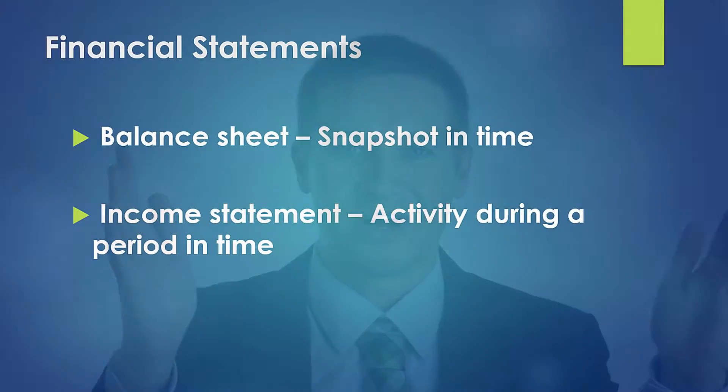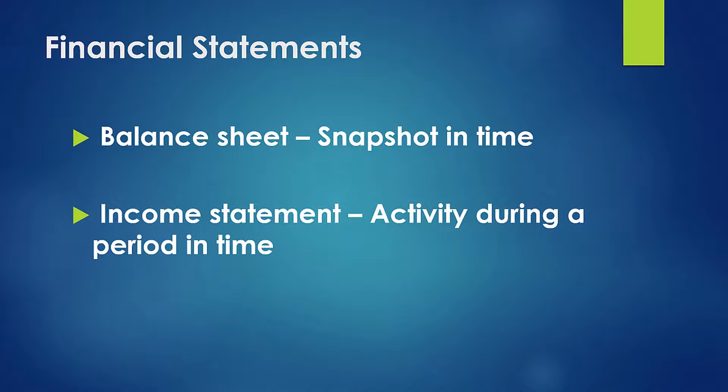Your balance sheet will have two snapshots in time: your assets and liabilities at the beginning of a period and at the end of a period. Your income statement shows you what's happening throughout this period. When you introduce this element of time, you also introduce risk, and that's what we're trying to understand here.